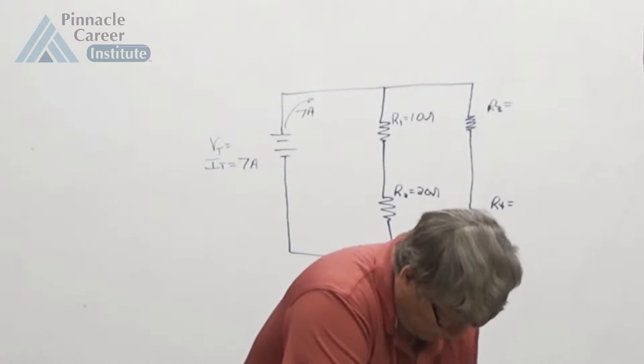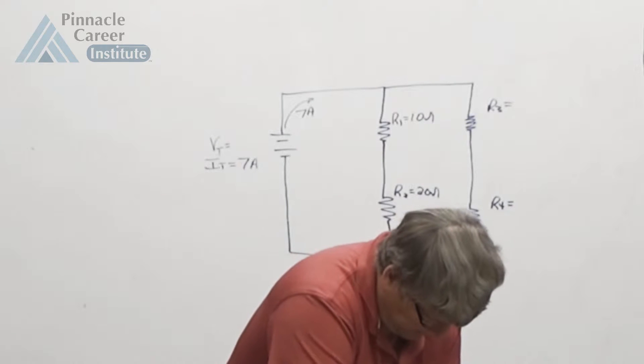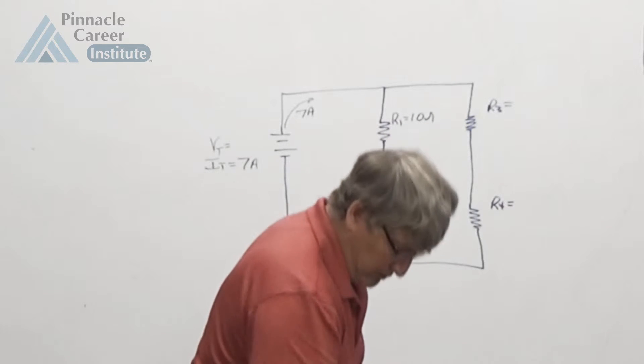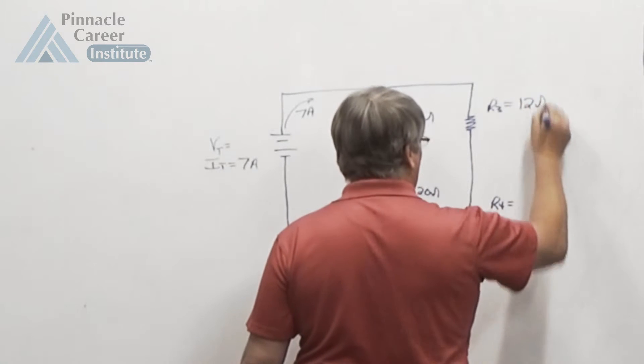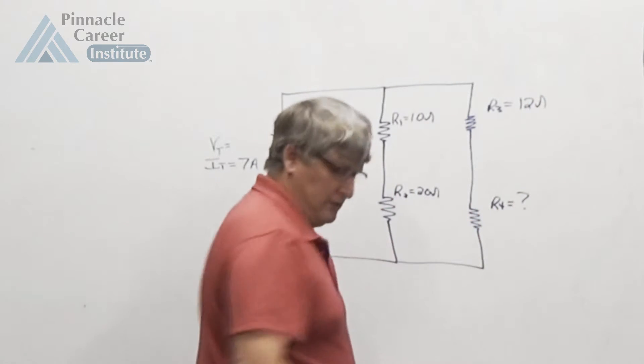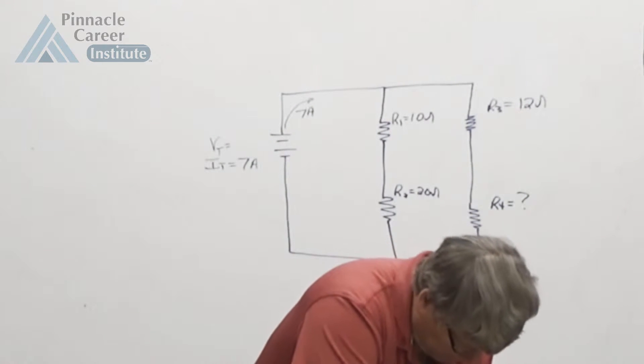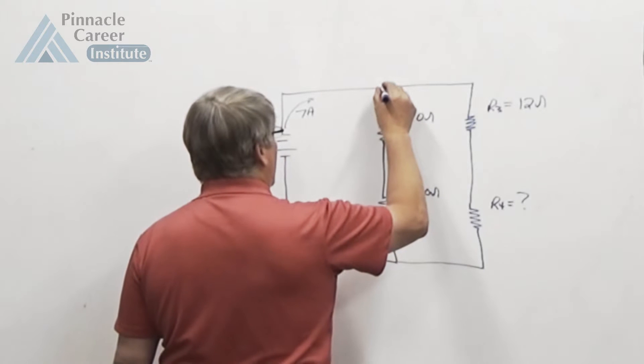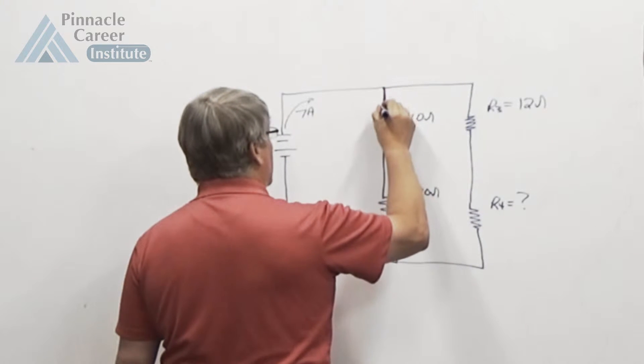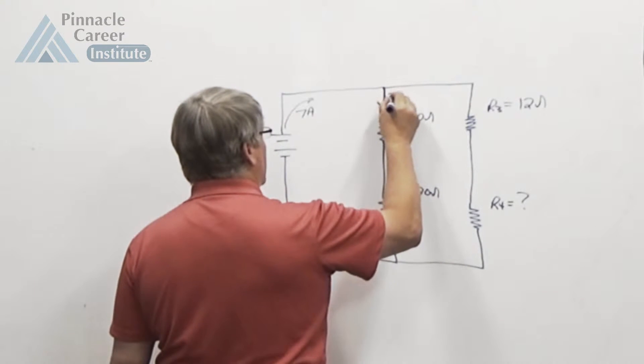On R3 they gave us 12 ohms, but they didn't give us anything for R4. So R3 is 12 ohms, R4 is a question mark. They gave us something else there. They told us that I1 was 3 amps, which means current coming through this first branch is 3 amps.